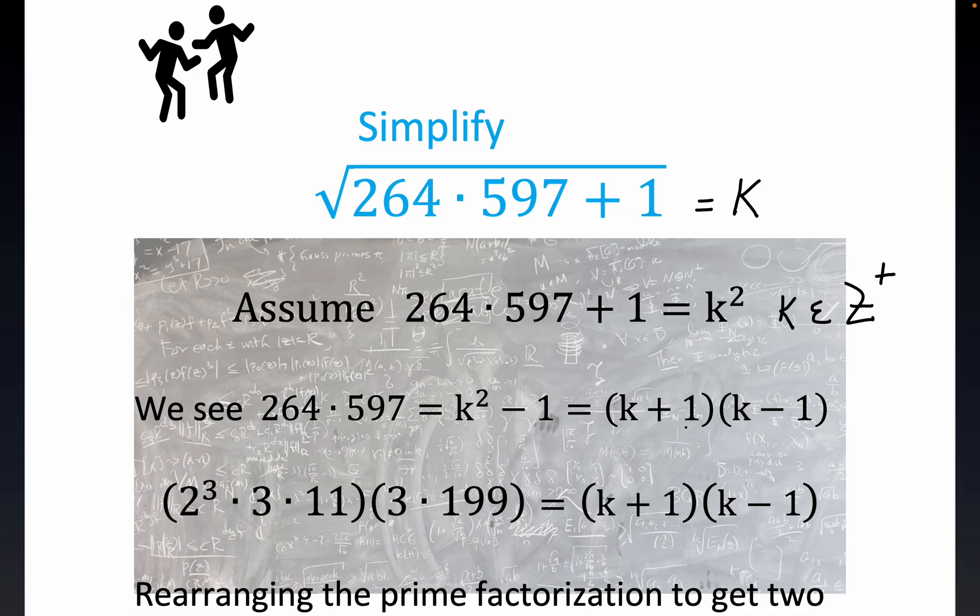So the next step here, which I think is easiest, and it's not too hard to find this prime factorization. This right here is equal to, 264 is equal to 8 times 33, and 8 times 33 has this prime factorization. 597 is even easier. It's equal to 3 times 199.